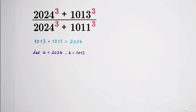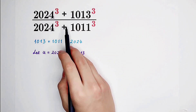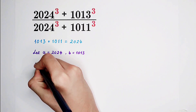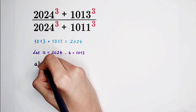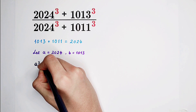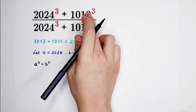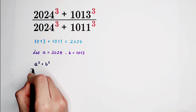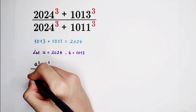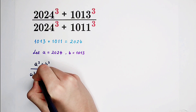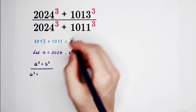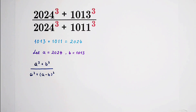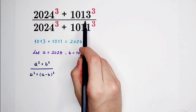Very nice. Our original term, this complicated fraction, can suddenly be turned into an easy fraction concerning a and b. For example, the numerator will be a cubed plus b cubed. What about the denominator? Now, the denominator: 2,024 cubed is just a cubed, and 1,011 is a minus b, so it is a minus b cubed. For simplifying this fraction, we should simplify this.